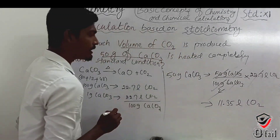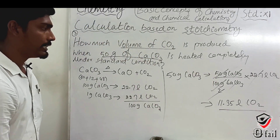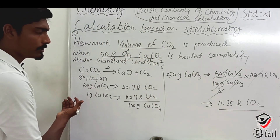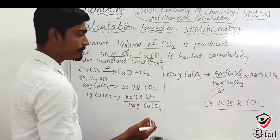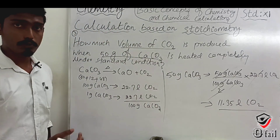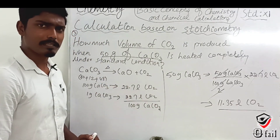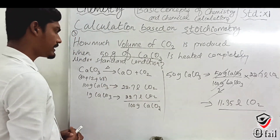This is the answer. 50 grams of CaCO₃ heated completely will produce 11.35 liters of CO₂.